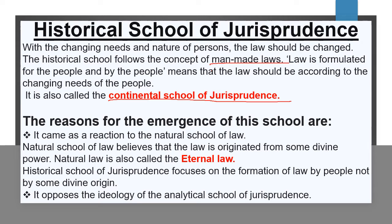The historical school of jurisprudence focused on the formation of law by people. This is about law development which is called by people, not by divine, nor by God. Here we do not talk about natural law, divine laws, or eternal laws. The historical school talks about man-made laws. The next point is it opposed the ideology of analytical school of jurisprudence.